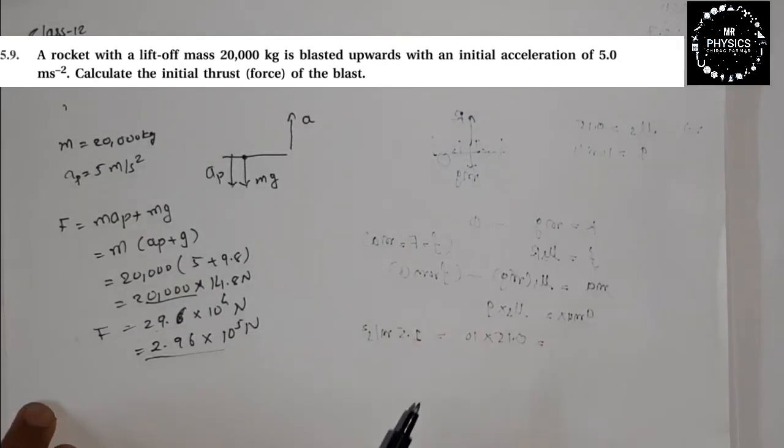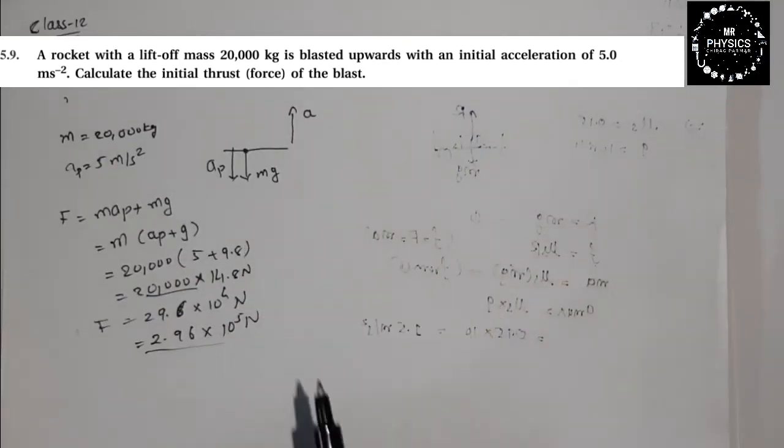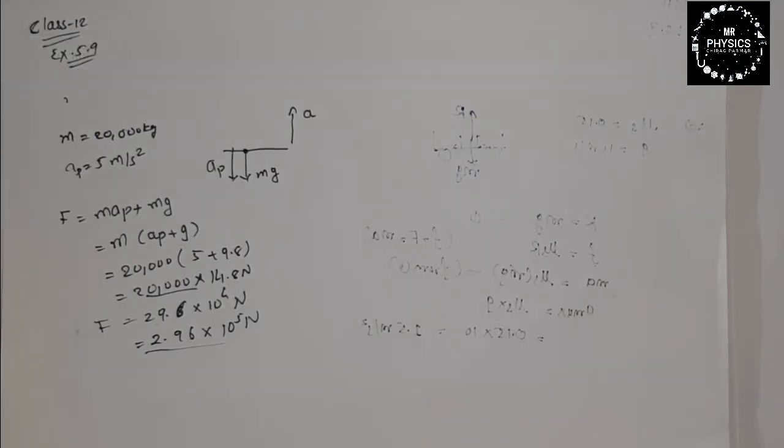This is our answer. In the textbook, this answer is given: 10 to the 5 Newton. Very simple. You need to understand when acceleration is upward or downward, how this works. Thank you.